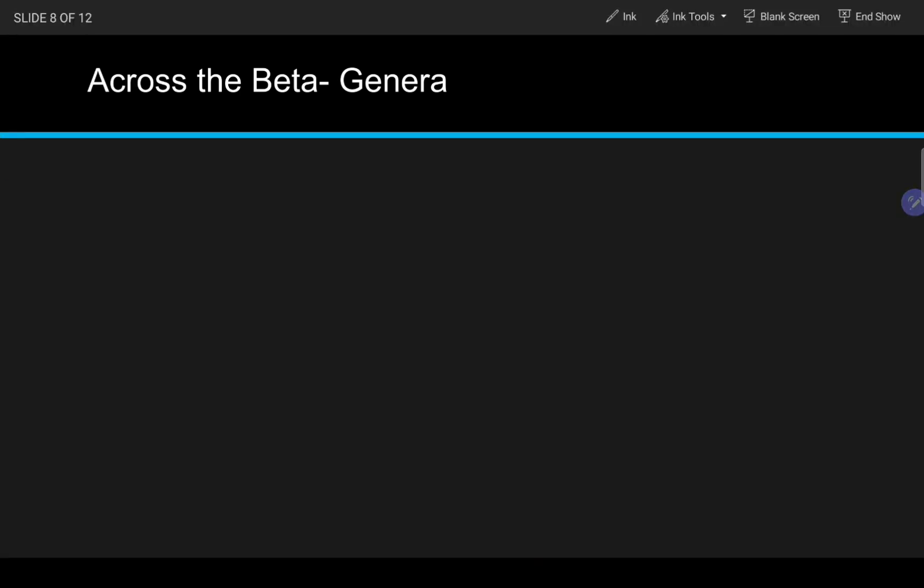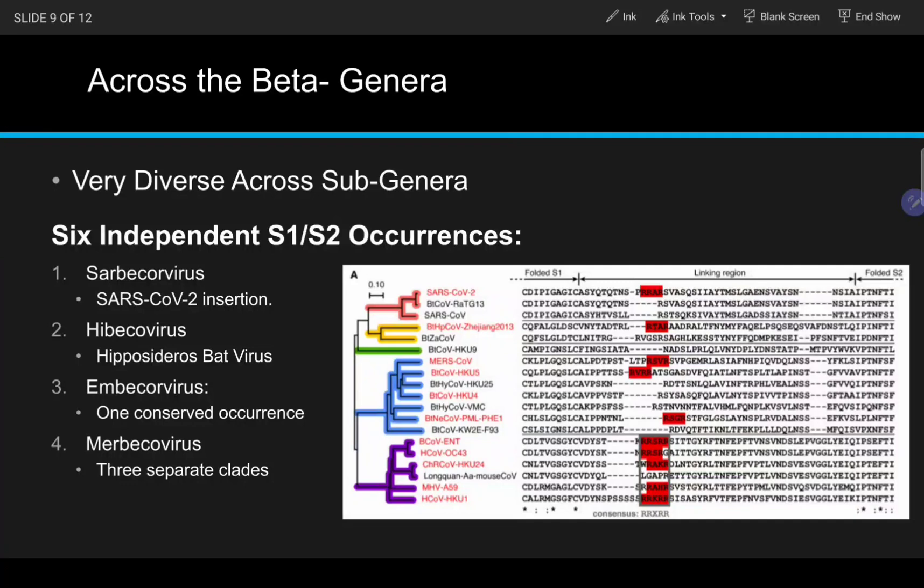The insertion of the multibasic loop in SARS-CoV-2 as the only known Sarbecovirus with the site means this occurred very recently and independently. Similarly, the Hebecovirus subgroup Hyposidurus bat virus also has an S1/S2 furin cleavage site of independent origin.